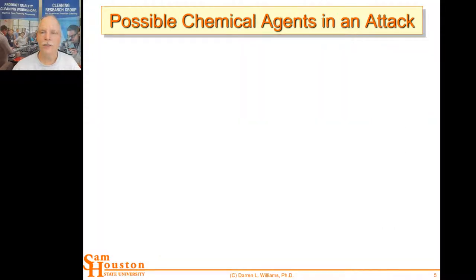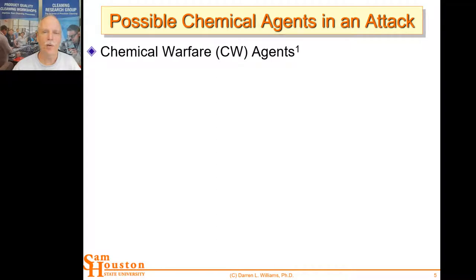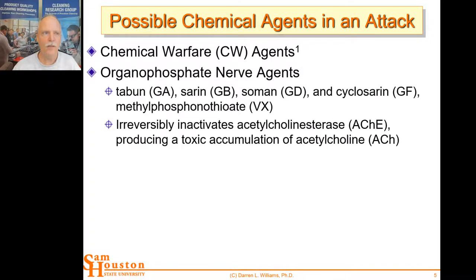Let's talk about the different capabilities to cause harm. One possibility is a chemical attack. Chemical warfare agents are typically organophosphate nerve agents — you've heard different names like sarin, cyclosarin, and VX nerve gas.